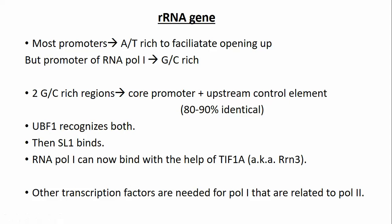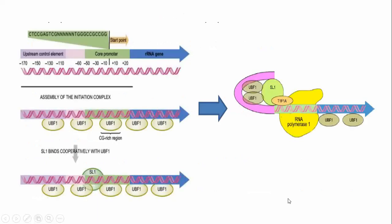Other transcription factors related to Pol II are also needed for Pol I. UBF1 binds the GC-rich regions and makes the DNA configuration open, and only then can SL1 bind. When SL1 binds, it bends the DNA. UBF1 and SL1 work together to bend the DNA, allowing TIF1A and RNA Pol I to bind.